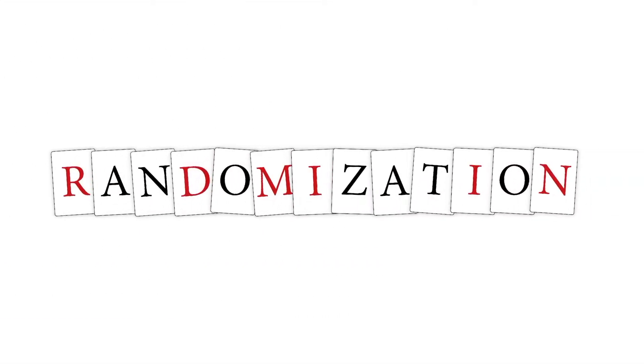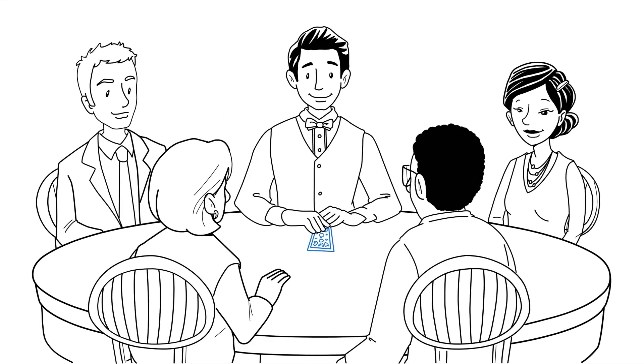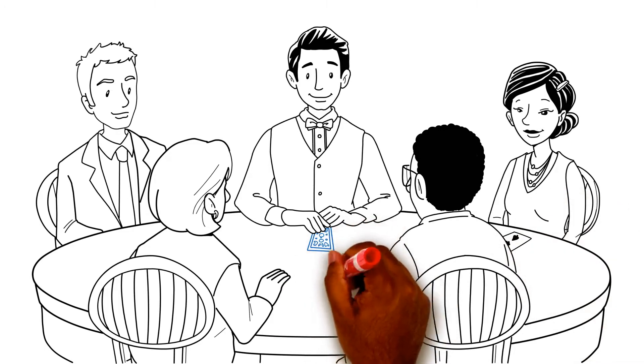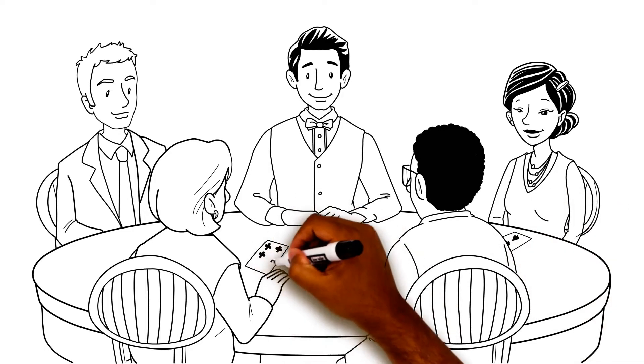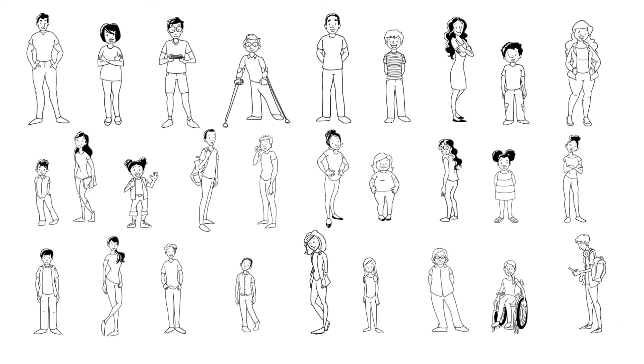The researchers will use a process called randomization. You can think of randomization like shuffling a deck of playing cards. When you shuffle the cards, you are mixing them up into a random order. When the cards are dealt out in this random way, the order of the cards is not controlled by the dealer or by the players.